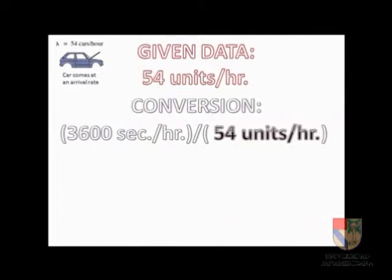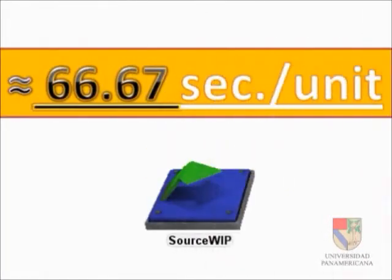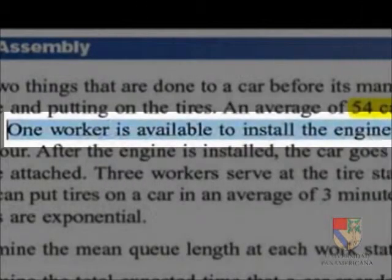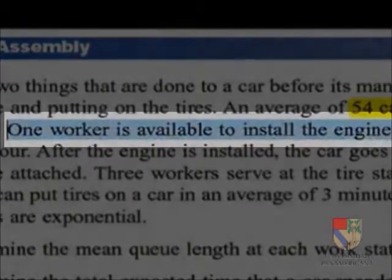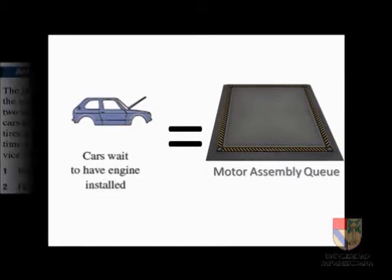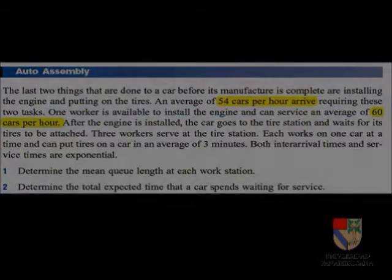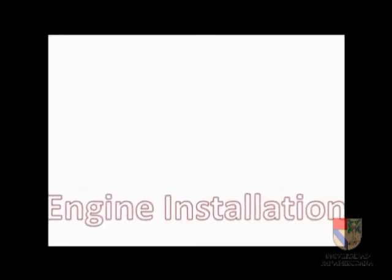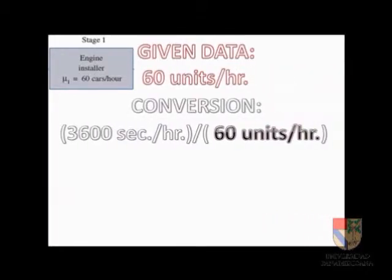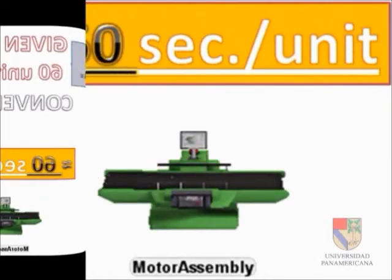The working process arrives at a rate of 54 units per hour, which means 66.67 seconds per unit — the mean time that follows the exponential distribution. The engine installation processes 60 units per hour, meaning it processes one unit each 60 seconds, which will be the mean time for the exponential distribution for the engine.